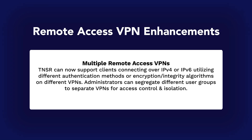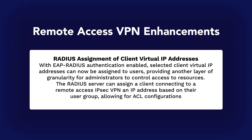Tensor 2406 is introducing enhanced VPN capabilities to streamline and secure remote access for diverse user groups. Now supporting both IPv4 and IPv6 clients, Tensor offers flexible authentication methods and customizable encryption and integrity algorithms across different VPNs. This enables administrators to segregate user groups into separate VPNs, enhancing access control and isolation. With EAP RADIUS authentication, administrators can assign specific virtual IP addresses to clients based on their user group, allowing for precise access control configurations and ensuring users only access resources pertinent to their roles.